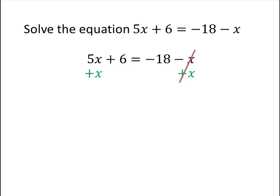In this way, the x's on the right-hand side of the equation will cancel, minus x plus x equals 0, and then on the left-hand side, we'll have 5x plus x, which equals 6x.